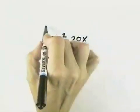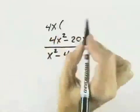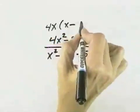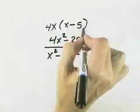We always look for our greatest common factor first, and in the numerator, the greatest common factor is 4x. And when we divide out 4x, we're left with x minus 5.